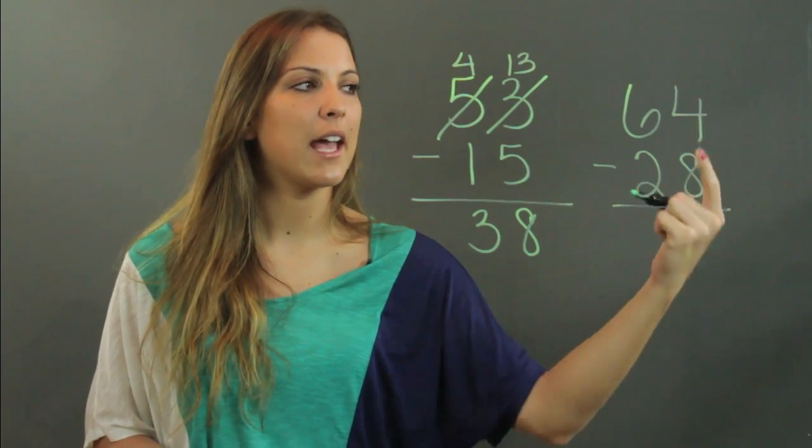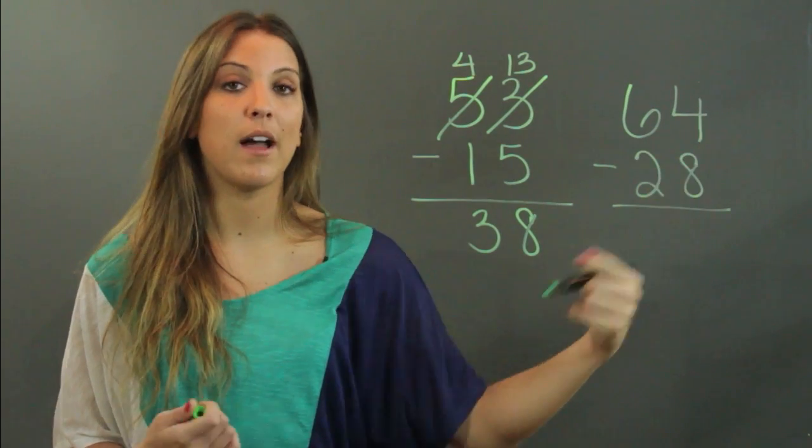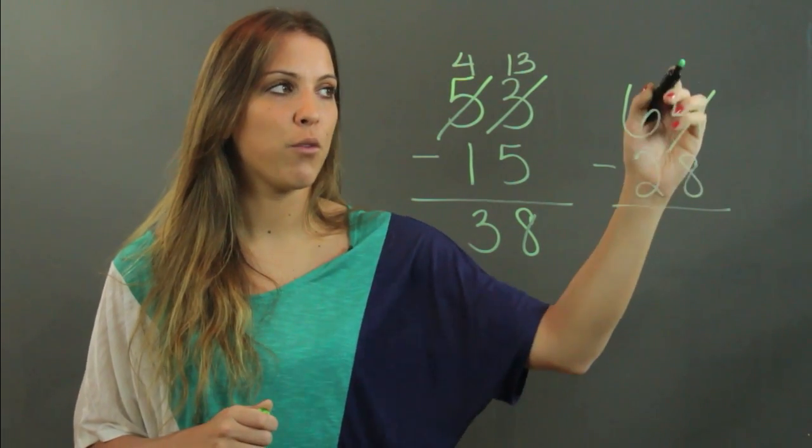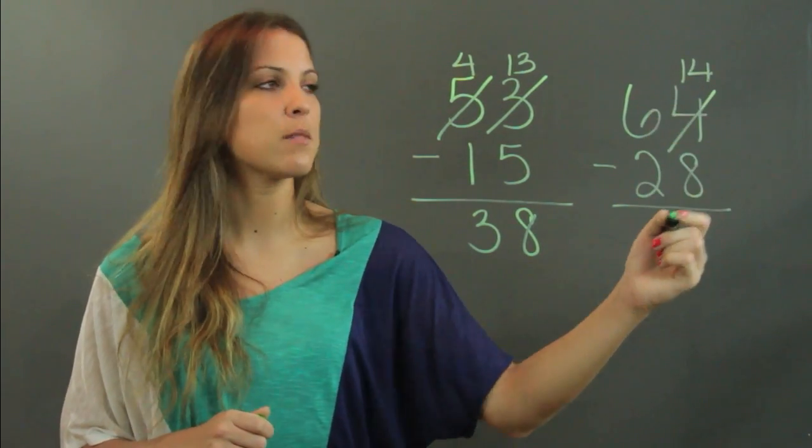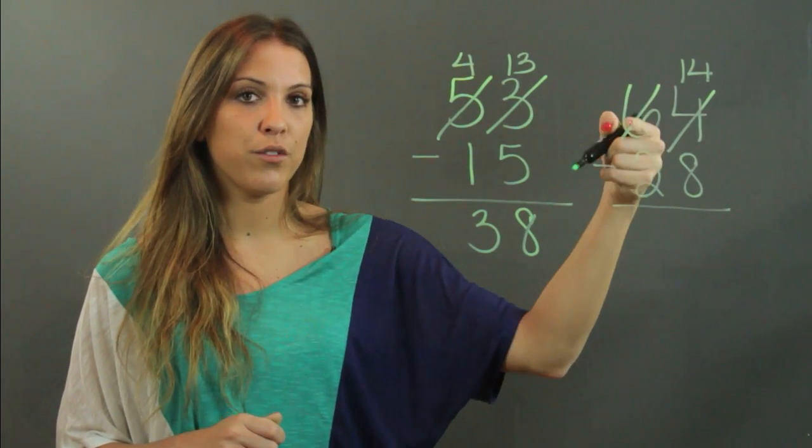Again, I can't take 8 away from 4, so I have to borrow. You're going to make that 4 a 14 so that you're able to subtract it. But you did that by borrowing one from the number to the left of it, so that 6 becomes a 5.